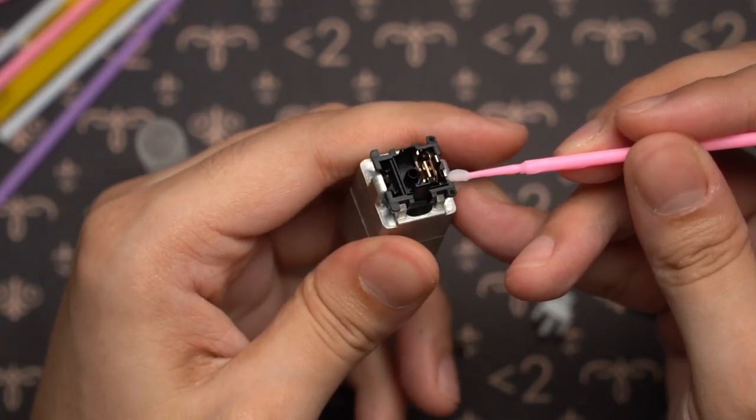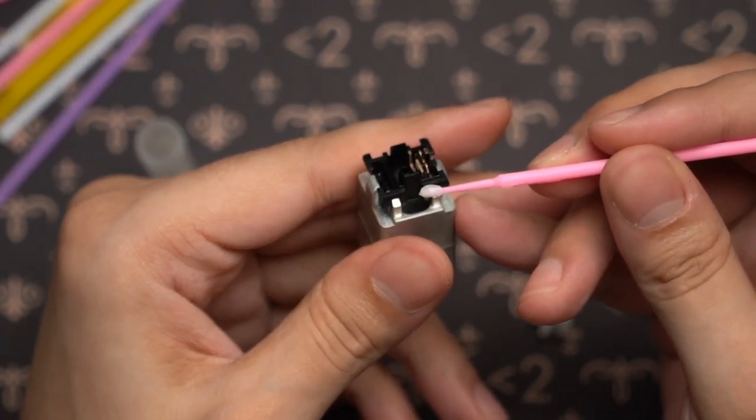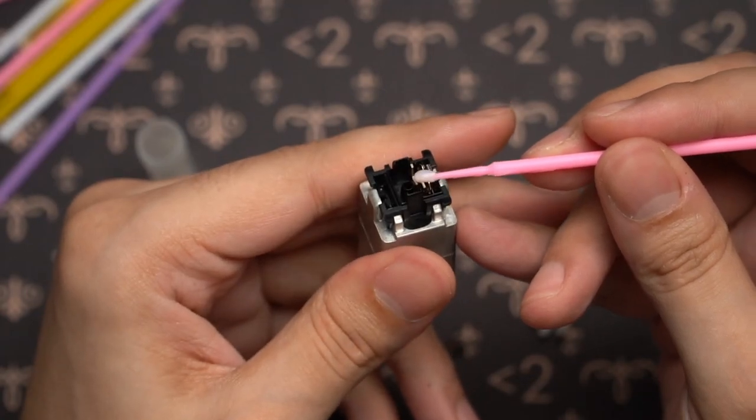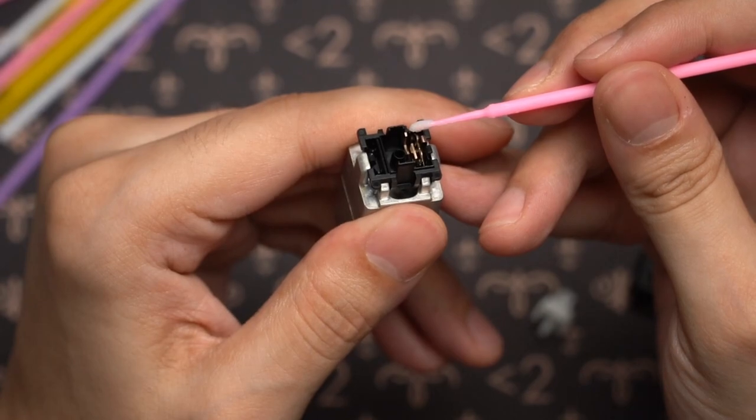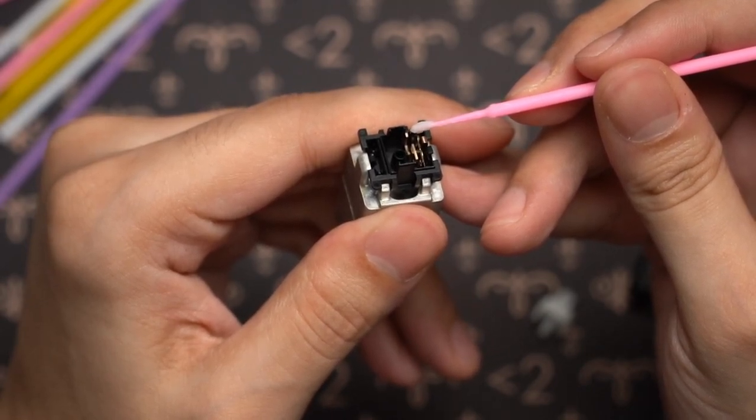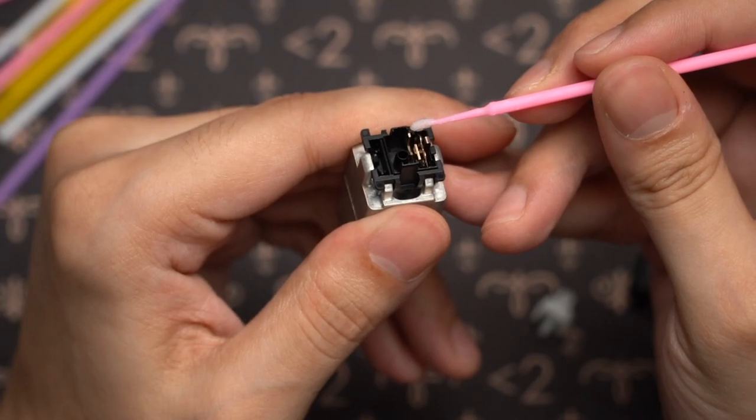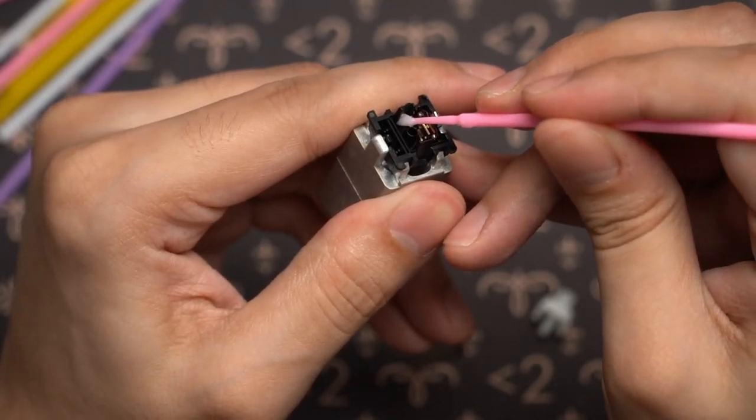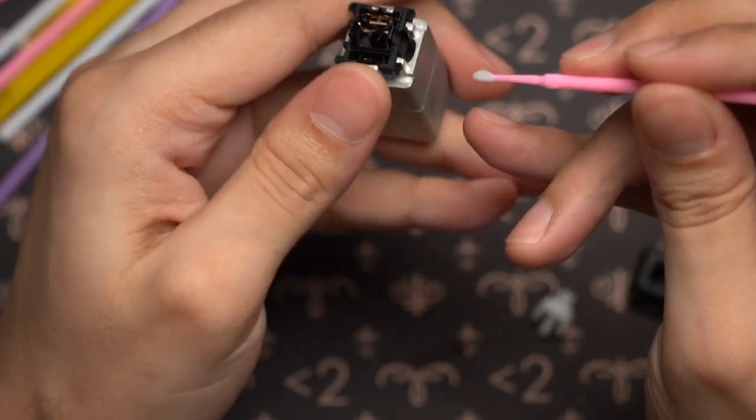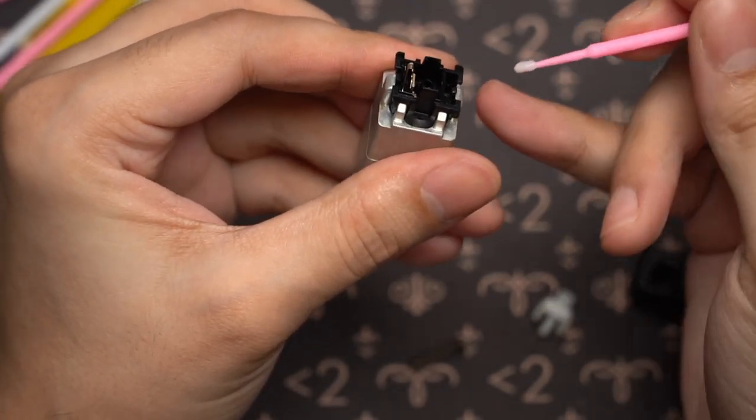So we're not even going to touch the stem. We're going to simply touch the housing. Now I strongly suggest that you start learning on a black housing. A black housing allows you to see if you have over lubed and over lubing can be very problematic, especially with tactile switches. Now for this one here, we're just going to do a light dab on each rail, just like that.